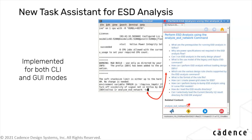For example, when the Task Assistant is accessed in CLI mode, it provides answers to common questions such as the format of the rule file, use model of the command, and supported ESD checks.